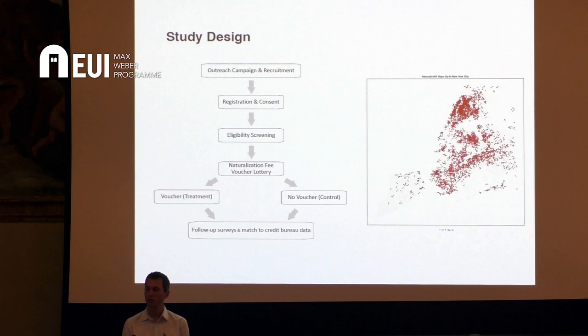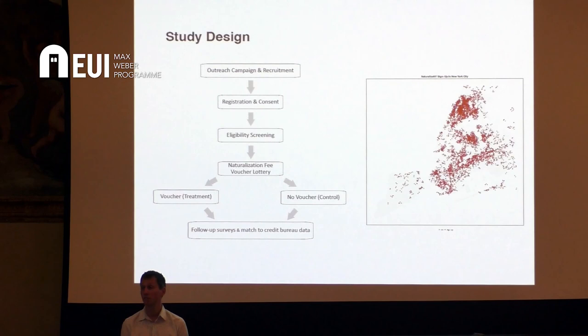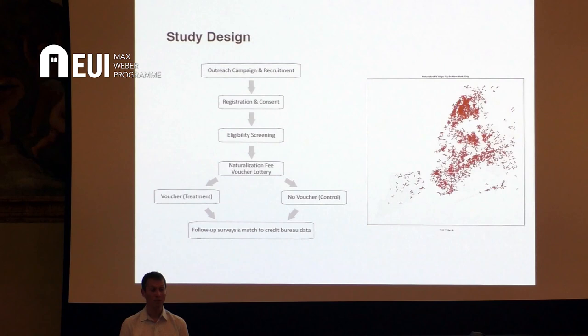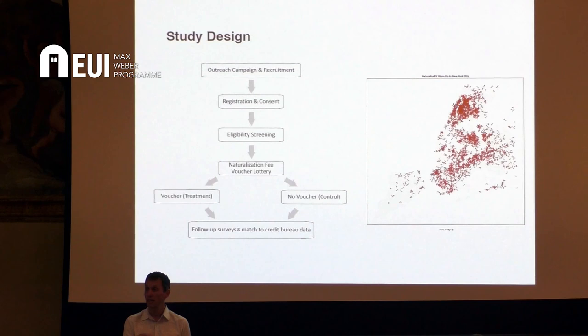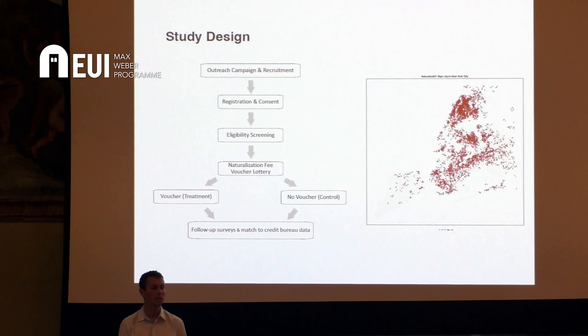Those deemed eligible were entered into a lottery. When the application window closed, the lottery was run. Those who won received a voucher they could only use to file the naturalization application with U.S. immigration services. Those who didn't win just received basic information on how to apply for naturalization. We combined the data from the registration and lottery with credit records to track economic outcomes over time — income, credit scores — and also ran surveys measuring non-economic dimensions of integration: political, social, and psychological integration, similar to what we did in Switzerland. Most registrants were concentrated in the five boroughs of New York City.